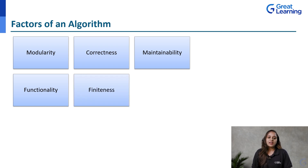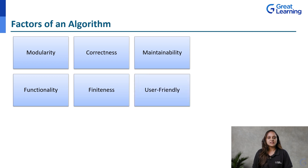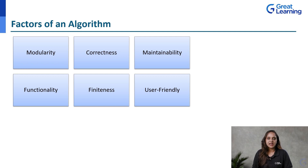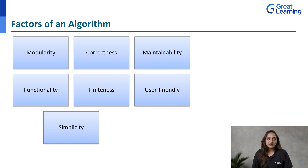Next is finiteness. An algorithm should be designed so that it terminates after a finite number of steps. Next is user-friendly — an algorithm should be designed so that it is easy for a user to understand. Basically, an algorithm is written in normal English language where all developers can understand it easily. Next is simplicity. If an algorithm is simple, then it is simple to understand. It should be designed so that it is very simple for any developer to understand when designing their program.